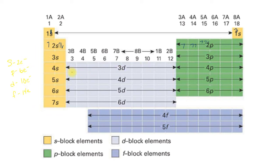I can remember how many electrons fit into the 3d energy level by just counting the boxes: one, two, three, four, five, six, seven, eight, nine, ten — there are 10 electrons. And there are 14 across the f block. Using the periodic table you get on a test, we need to remember the block rules.